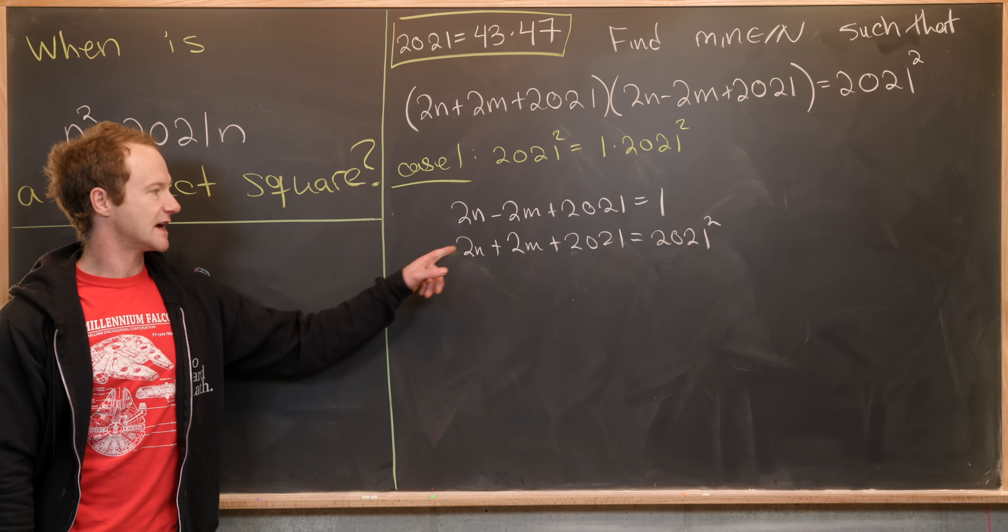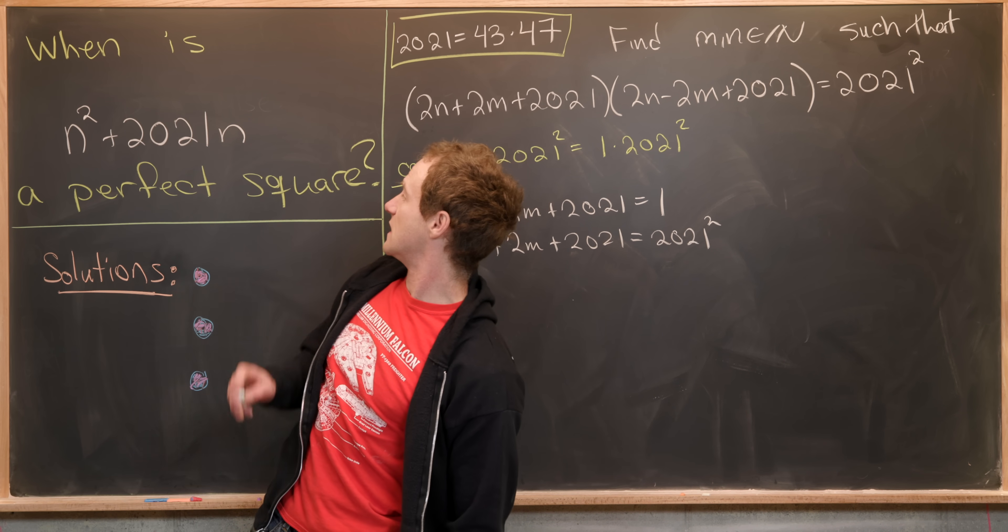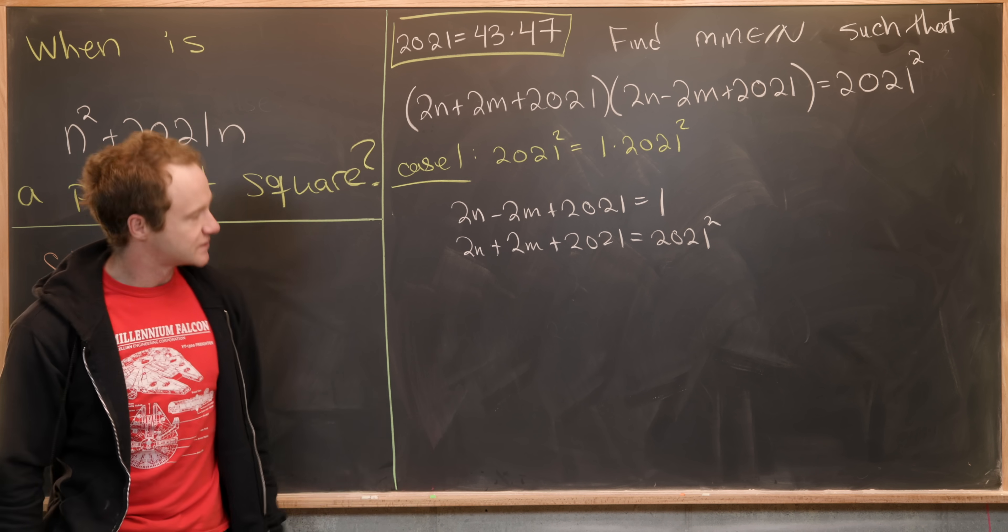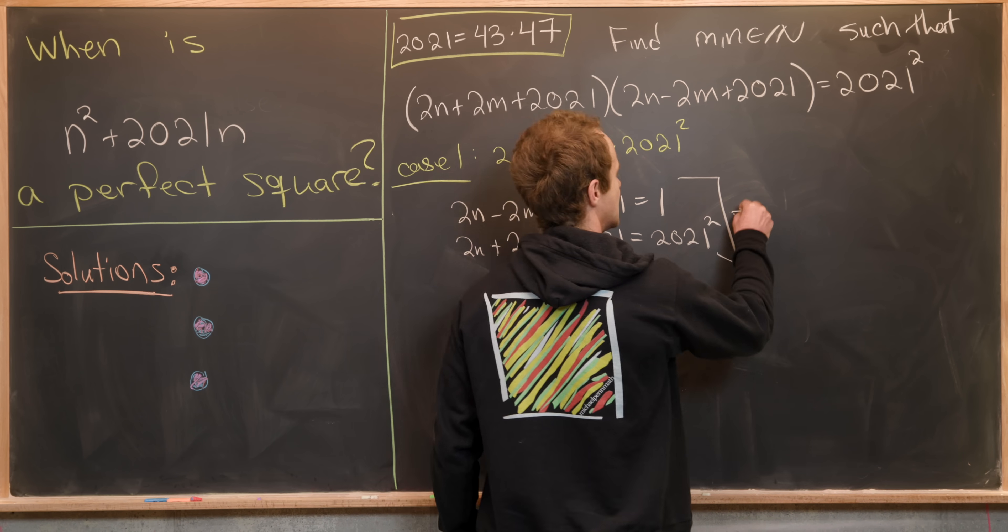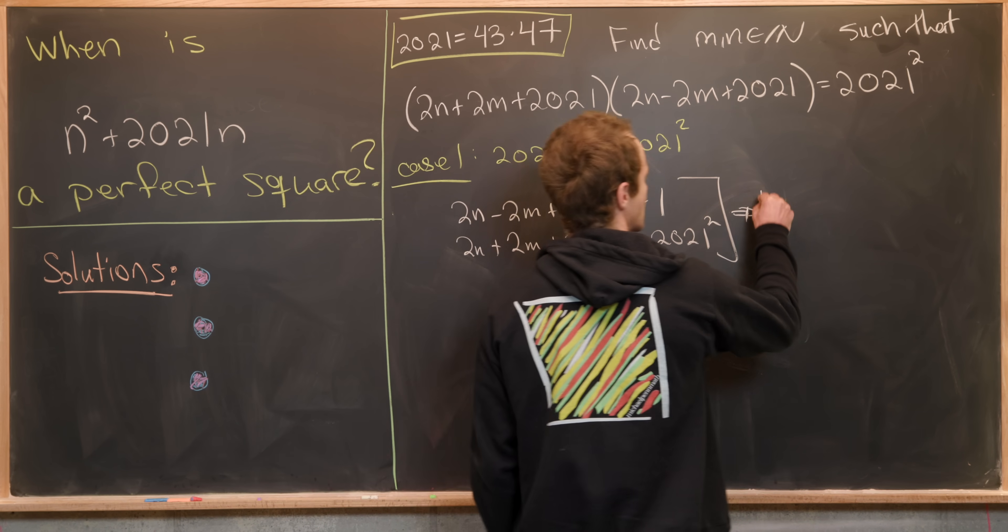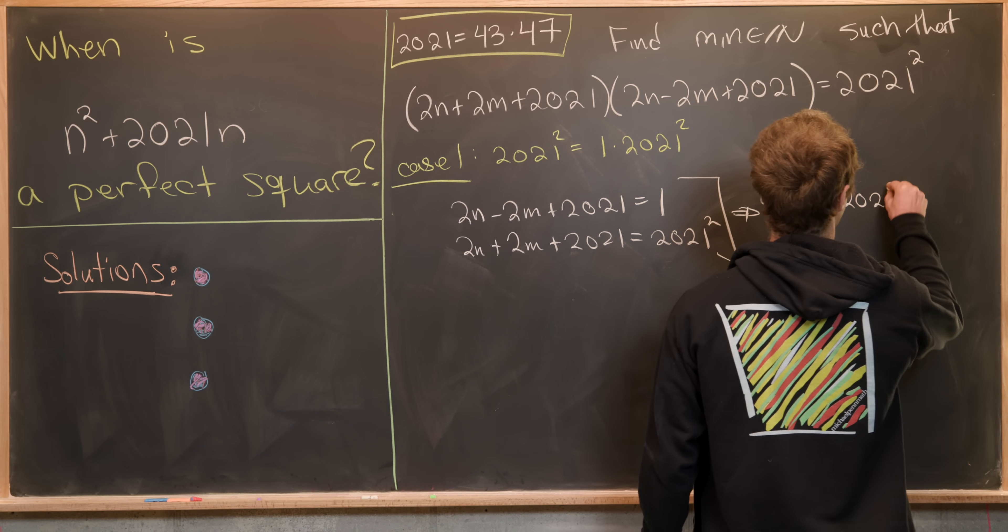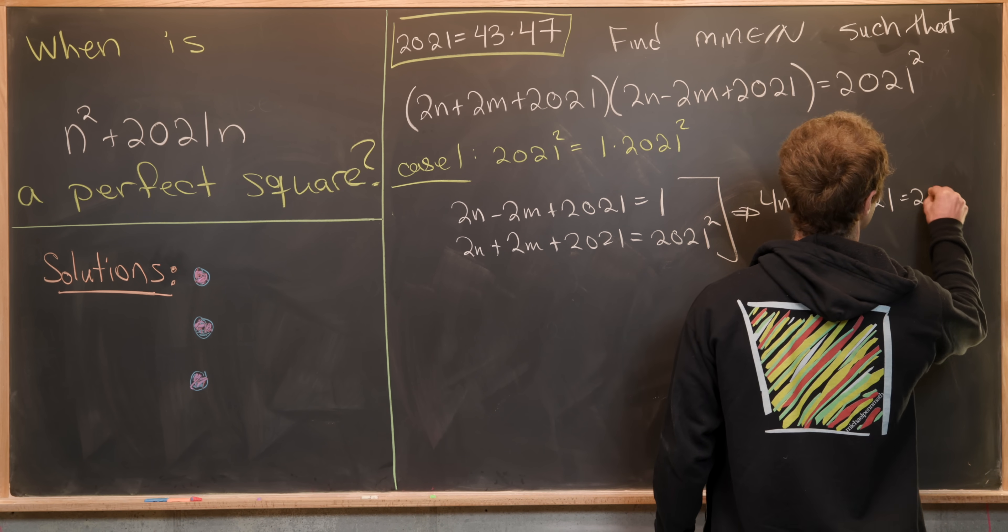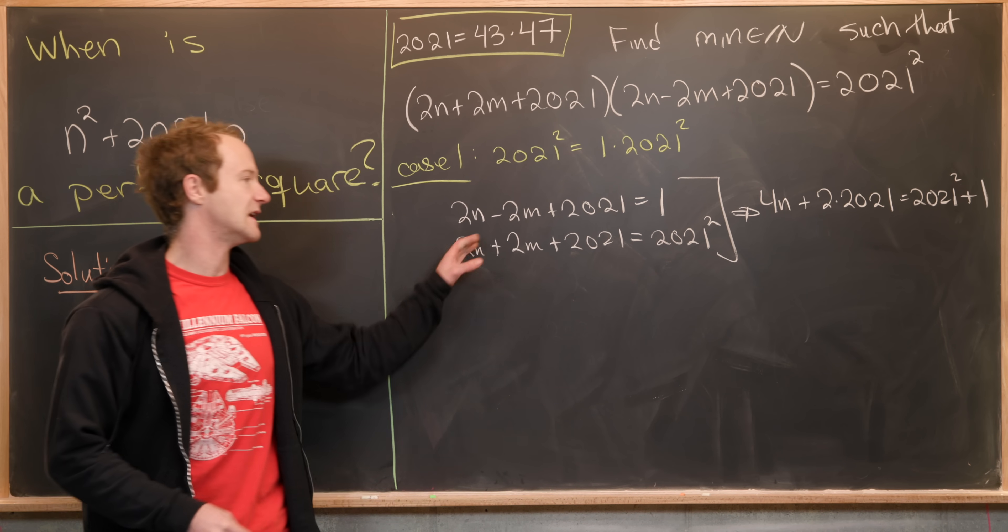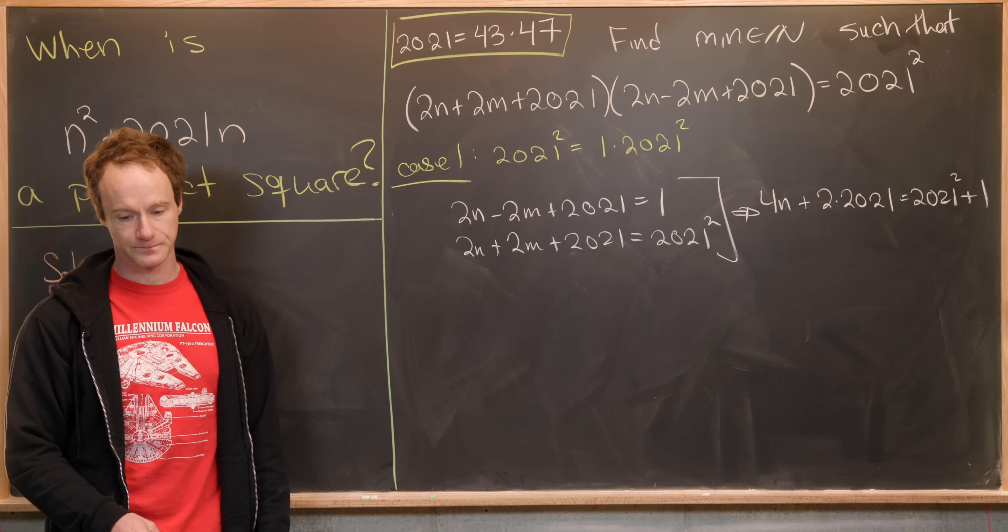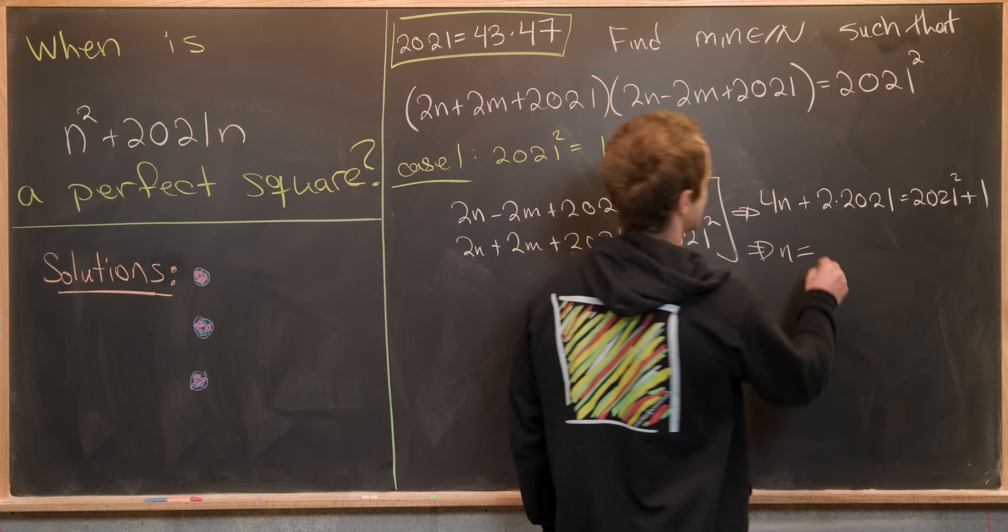So next we can eliminate m. Notice we don't really need to know the value of m in the end. So we can eliminate m by maybe adding these two equations. If we add these two equations, that will give us 4n + 2(2021) = 2021² + 1.